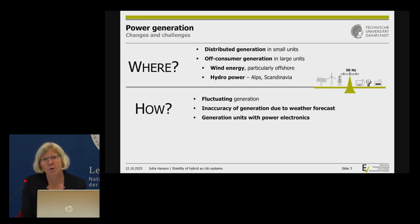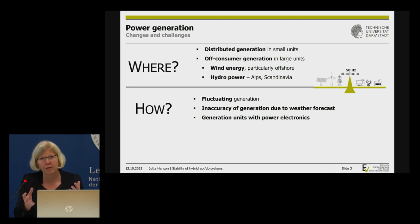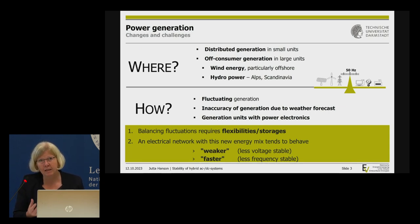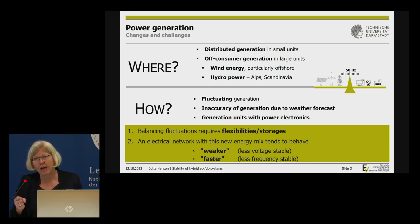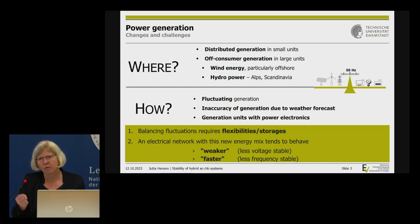One of the major aspects of my research: we have exchanged generation units. We no longer have synchronous machines with big shafts and a lot of inertia — we now have power electronics, which are very, very fast. We have to change the principles of our network. The network will be faster due to missing inertia, and it will be weaker — less stiff in terms of voltages.